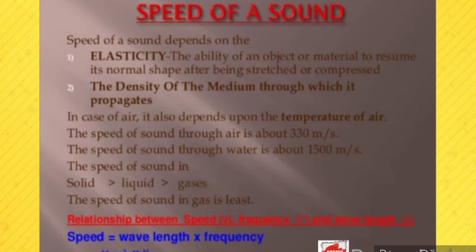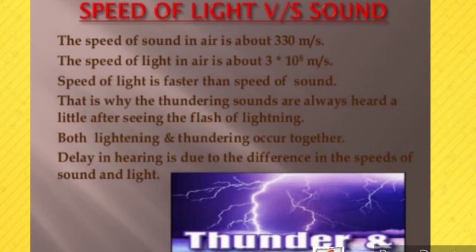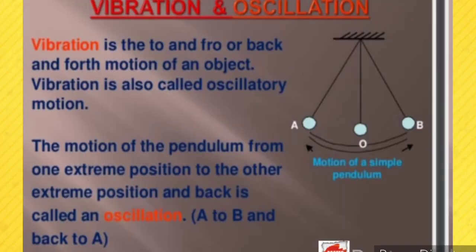Comparing speed of light versus speed of sound: the speed of sound in air is about 330 meters per second, while the speed of light in air is about 3 × 10⁸ meters per second. Speed of light is much faster than speed of sound. That is why thundering sounds are always heard a little after seeing the flash of lightning — both lightning and thunder occur together, but the delay in hearing is due to the difference in their speeds.